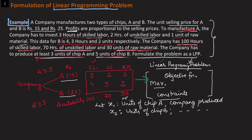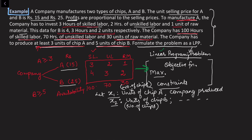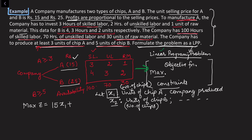Once I have decided on the decision variables, I will write the objective function. It is a maximization problem because the profits are proportional to the selling price. Per unit profit is rupees 15 for chip A, so the total profit from chip A is 15 times x1. Plus, chip B gives a profit of rupees 25 and the company produces x2 units, so we add 25 times x2. This gives the objective function: Maximize Z = 15x1 + 25x2.